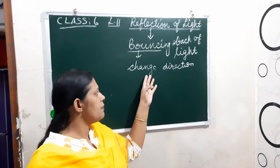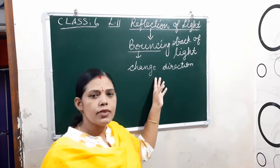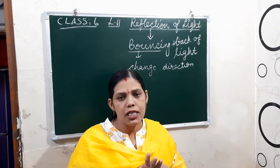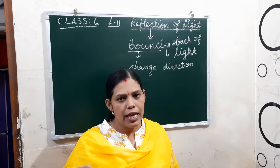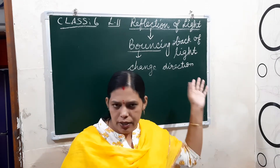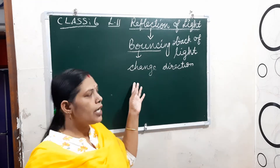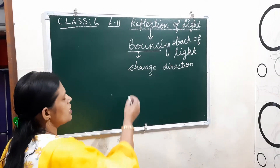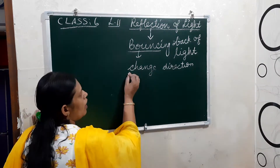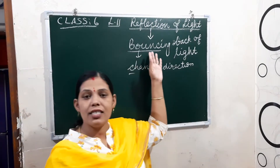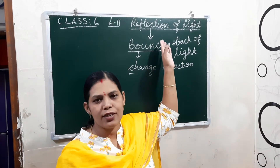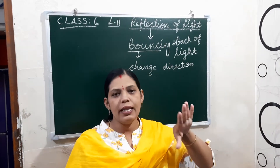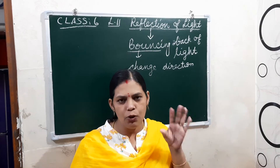When light falls on a surface, sometimes the reflection is regular and sometimes irregular — that is how it comes back. You can see this reflection of light when you look at the mirror. That is the best example.